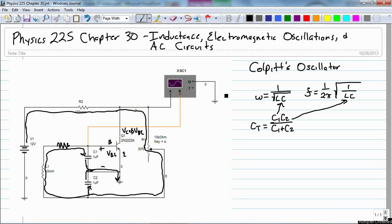The Colpitt's was used for many years in radios because it's very stable, and all you had to do was change either the inductance or the capacitance to change the frequency.